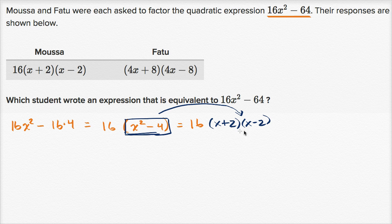So that's exactly what Moussa got. So Moussa did get an expression that is equivalent to 16x squared minus 64. Now let's think about Fatou.